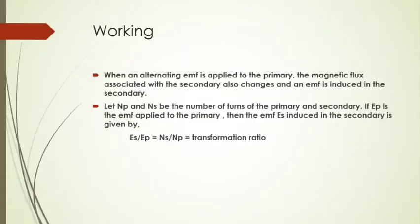Let NP and NS be the number of turns of the primary and secondary coils. If EP is the applied EMF to the primary and ES is the induced EMF in the secondary, then the transformation ratio is ES divided by EP, which equals NS divided by NP.